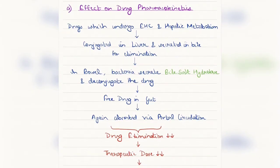Next, coming to the clinical aspects of enterohepatic circulation. First, we are going to see the effect on drug pharmacokinetics. So the drugs which undergo enterohepatic circulation and hepatic metabolism are conjugated in the liver and secreted in the bile for elimination purposes. But actually, what happens in the bowel—there are certain bacteria which secrete an enzyme known as bile salt hydrolase and thus deconjugate the drug.